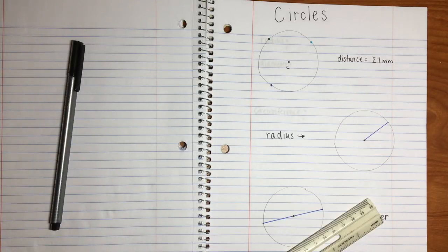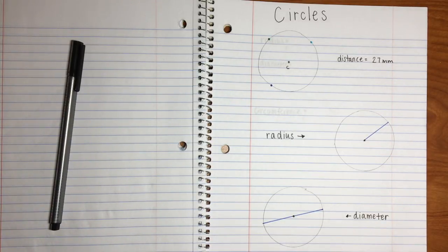A circle is associated with two related terms, radius and diameter. Students learn the radius is the distance from the center point to any point on the circle.